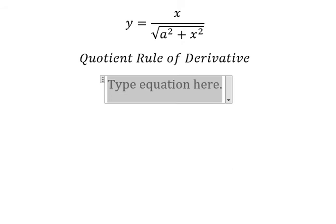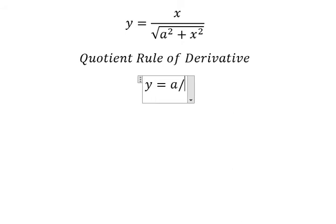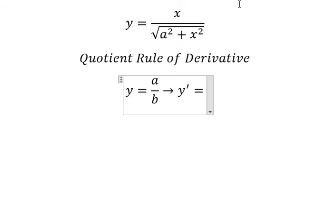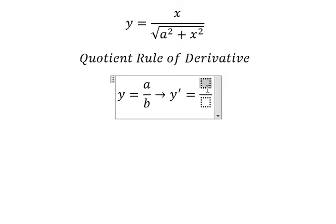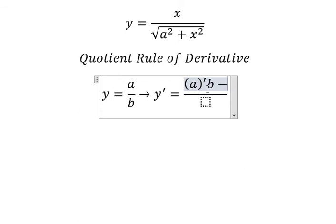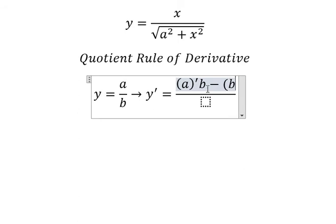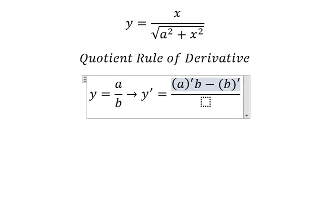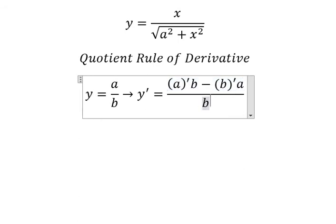For example, we have y equals a over b. If we do first derivative of this one, we need to do first derivative of a multiplied by b, minus we do first derivative of b multiplied by a, over b square.